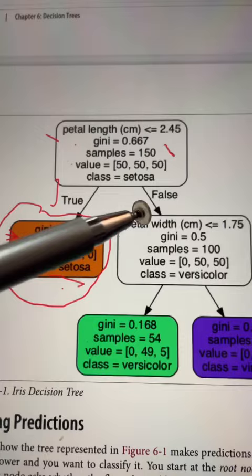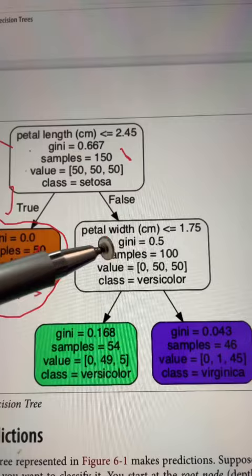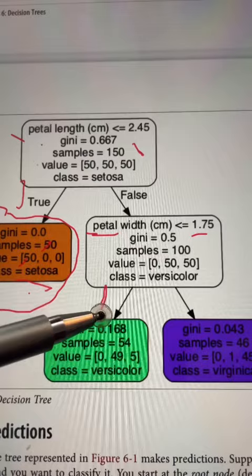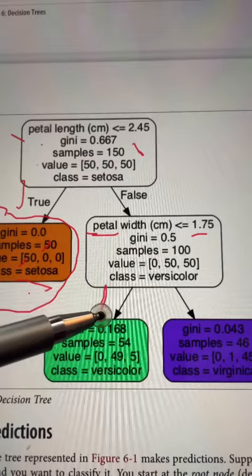Now if the petal length is not less than but rather greater than 2.45, then it further asks about the petal width, whether it is less than or equal to 1.75 centimeters. If it is true, then it classifies it as versicolor. If it is not, then it's classifying it as virginica. So this is how the decision tree works.